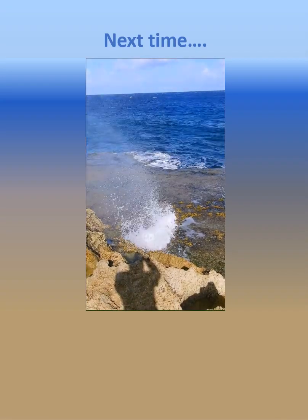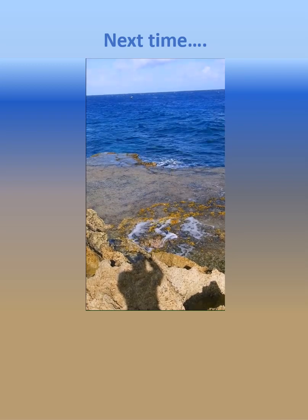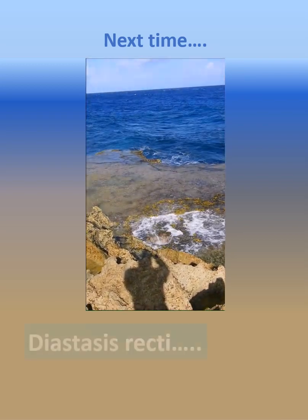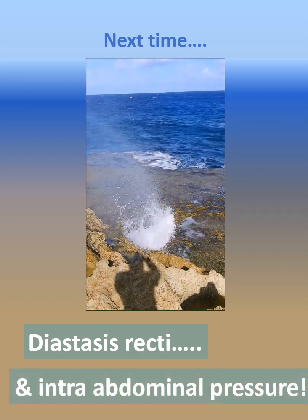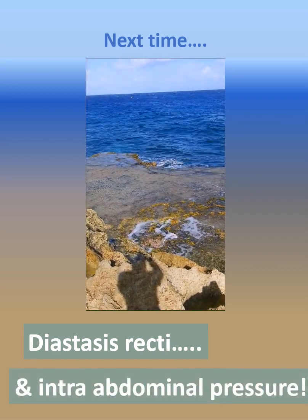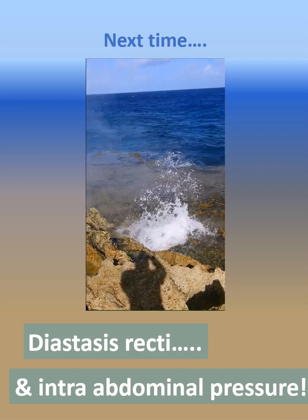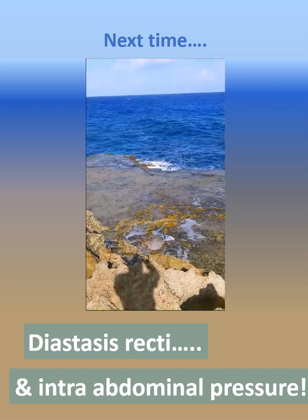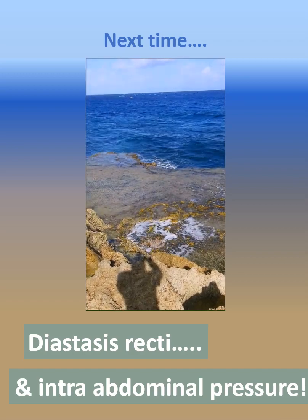Here we are at the end of the fourth video. Hopefully you enjoyed this video on the diaphragm and abdomen. Next time, we'll have a closer look at diastasis recti — the excessive bulging of the abdominal wall in pregnant women and people suffering back or pelvic pain — and this all in relation to intra-abdominal pressure. See you next time!